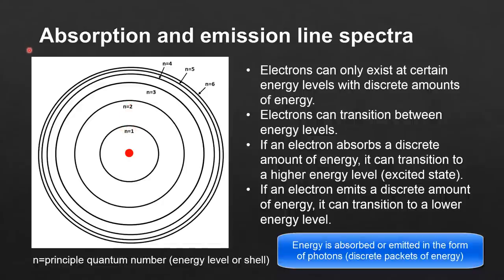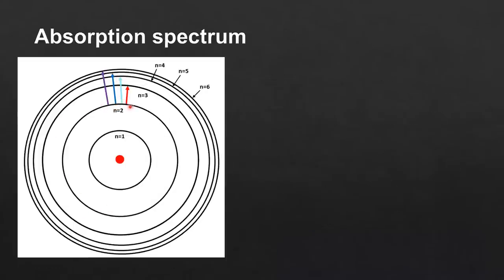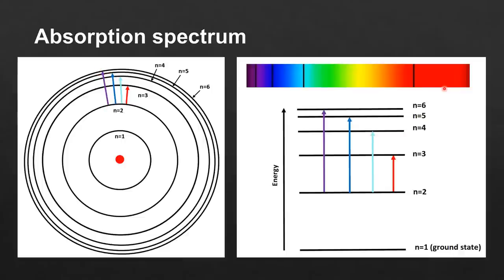Next we look at how these electron transitions between energy levels give rise to absorption and emission line spectra. Here we have the Bohr model of the atom, with an electron in the n equals 2 energy level. The arrows show the electron transitioning to the n equals 3, 4, 5, and 6 energy levels. Here we have an absorption spectrum, which has black lines on a colored background, and below it are the energy levels of the atom from n equals 1 to n equals 6.